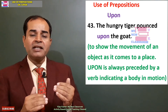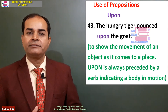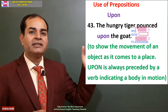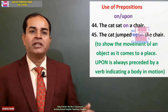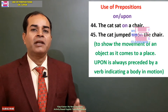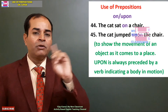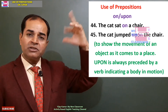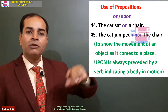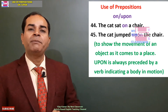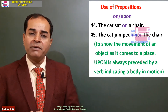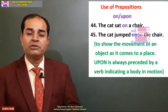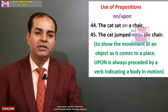The cat sat on a chair — here 'on' is used. 'Sat' shows the body is not in motion. But the tiger is pouncing upon the goat, the body is in motion. Upon is always preceded by a verb indicating a body in motion. Pounce — that's why 'upon' is used.